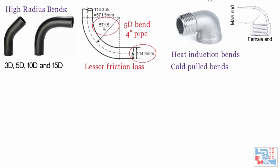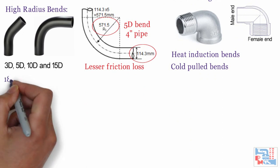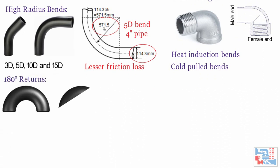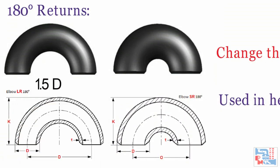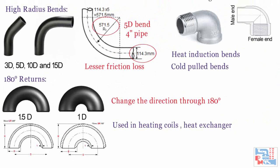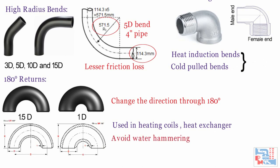Let's discuss other pipe fittings. The 180-degree return changes the direction through 180 degrees and is mainly used in heating coils and heat exchangers. These are available in 1.5D and 1D bend radius. This fitting greatly reduces water hammering effect and is used where pressure drop is critical.